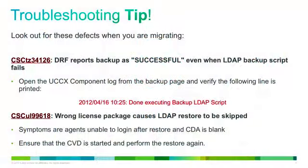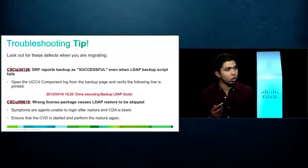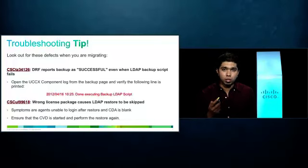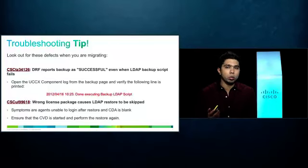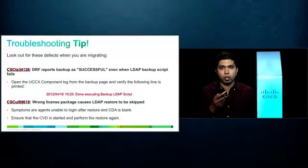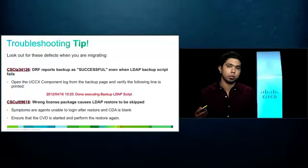There is one troubleshooting tip, based on the cases I have handled. If you look out for these two defects, you will have a much smoother transition. The first defect is a well-known one — we have a field notice for it — where the backup is shown as successful, but if you look at the logs, you will realize that the LDAP component was never backed up. When you restore the system, you find the LDAP component is missing, meaning agents cannot log in, causing an outage after the restore. The simple step to verify: once you take the backup, open the UCCX component log and look for the line which says 'done executing backup LDAP script.' That confirms your LDAP is backed up and you have a good backup.